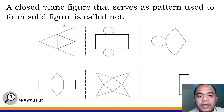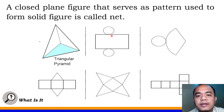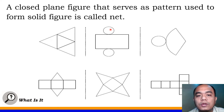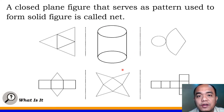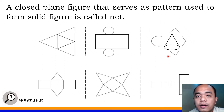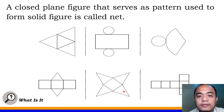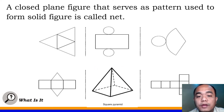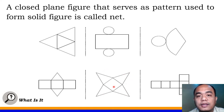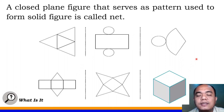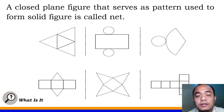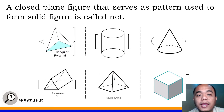Nets are used to form solid figures. This is an example of nets. As you can see, these are made up of a plane figure called a triangle, and this net is used to form a triangular pyramid. Next, we have a rectangle and two circles — this is a net for a cylinder. This one is a net for a cone. This one is a net of a prism. This is a net of a square pyramid — made up of four triangles and a square. And six squares form a cube. These are common examples of a net — a pattern formed from a plane figure to make a solid figure.